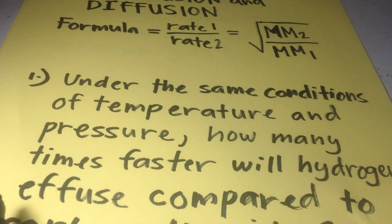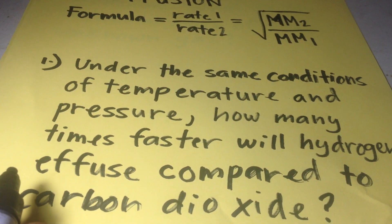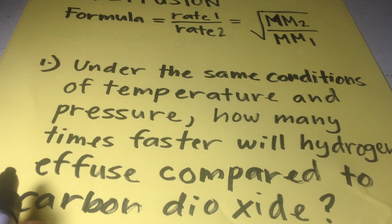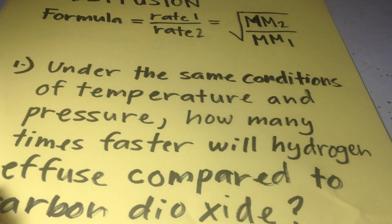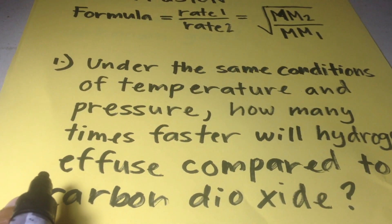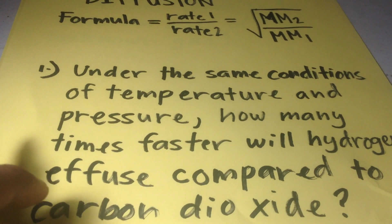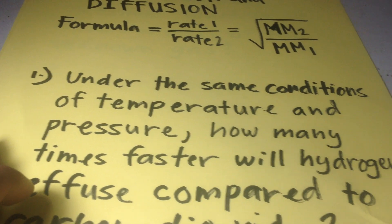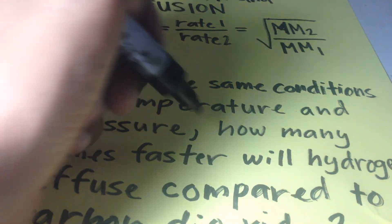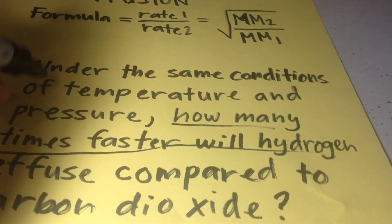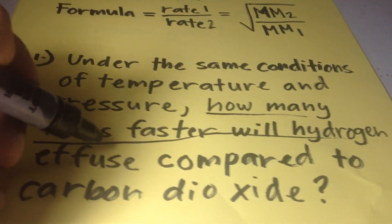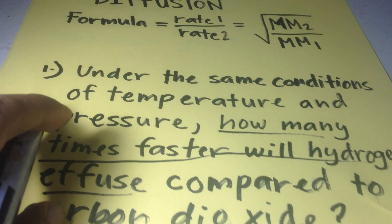So number 1: under the same conditions of temperature and pressure, how many times faster will hydrogen effuse compared to carbon dioxide? So we have a question here — how many times faster will hydrogen effuse? Alright, let's solve.